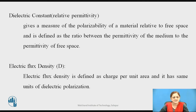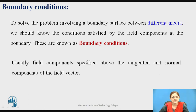The second parameter is the dielectric constant. It gives a measure of the polarizability of the material relative to free space, and is defined as the ratio between the permittivity of the medium to the permittivity of free space. Electric flux density is defined as charge per unit area. Let us now define the boundary conditions to solve problems involving the boundary surface between different media. We should know the conditions satisfied by the field components at this boundary — these are known as the boundary conditions.